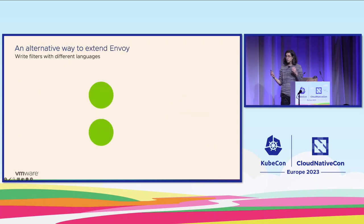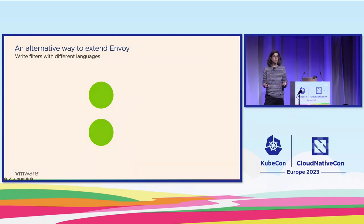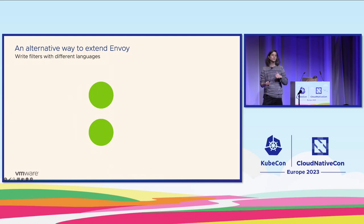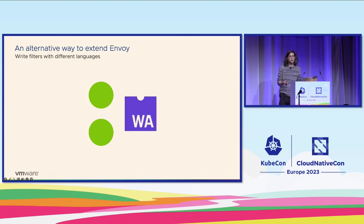Today I want to present you an alternative way to extend Envoy. Imagine that there is a way in which you can take different languages — languages that you already know — and create filters that will then be loaded by Envoy. You don't need to recompile anything. You don't need to do any extra step. Just get those modules and run them as filters inside Envoy.